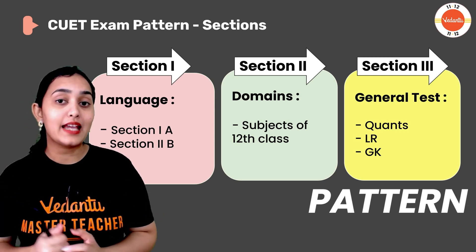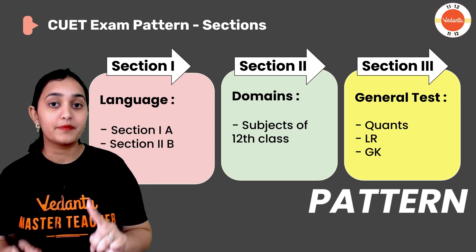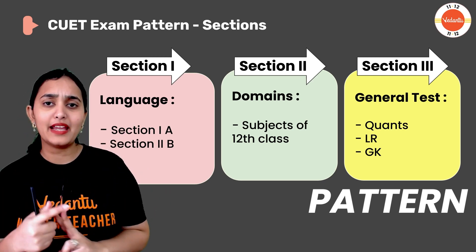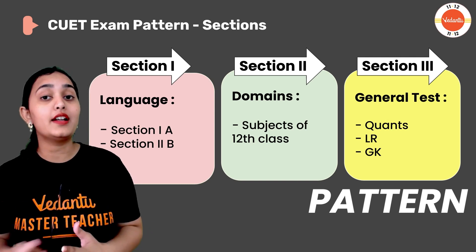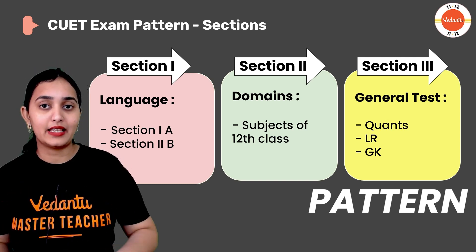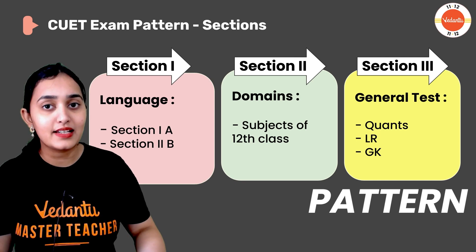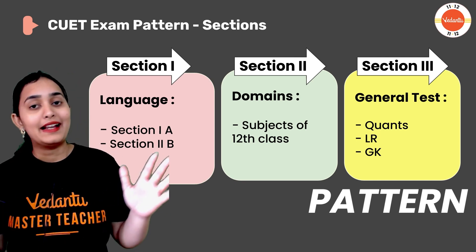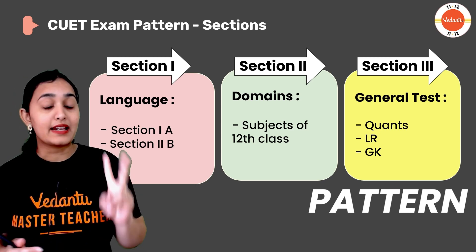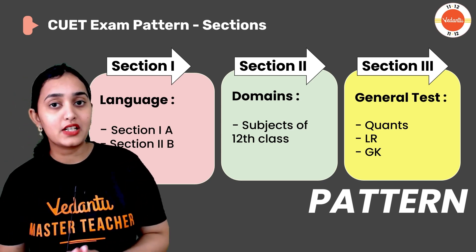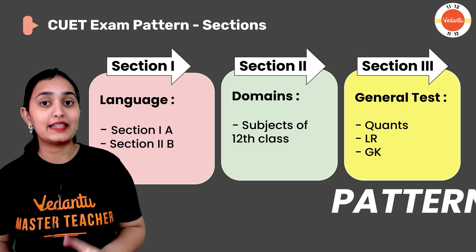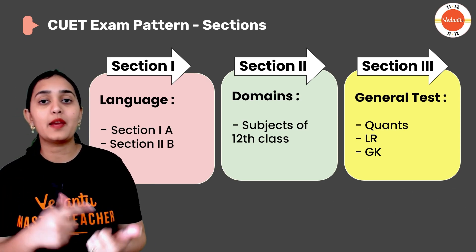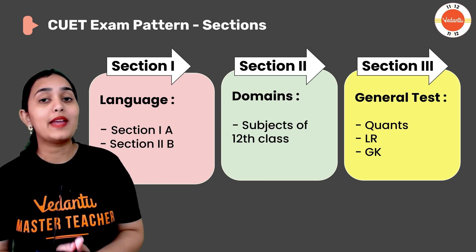How does the paper pattern work? There are three sections. Section 1 is the language section, divided into two parts: Part A and Part B. You can select two different languages — someone might take Sanskrit and English, Hindi and English, or French and English — it's completely your choice. Section 2 covers Domain Subjects, which are the subjects you learned in Class 12, like Accountancy, Business Studies, Maths, Physics, Chemistry, and Astronomy.